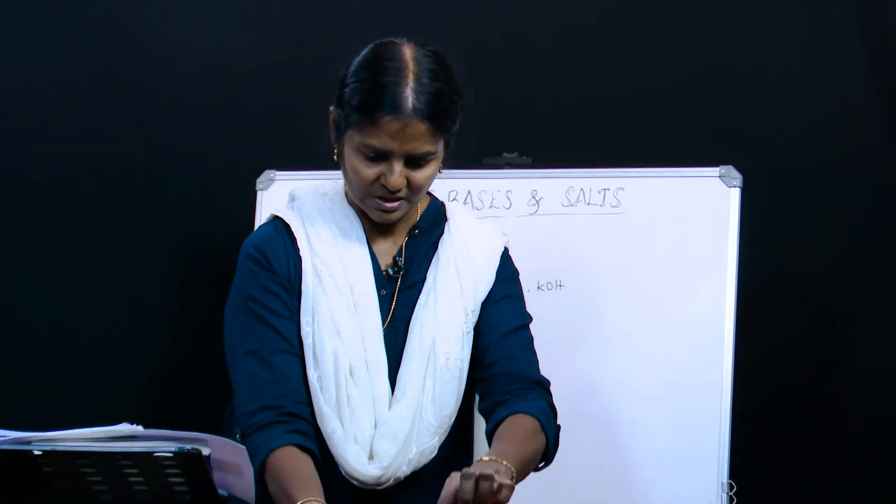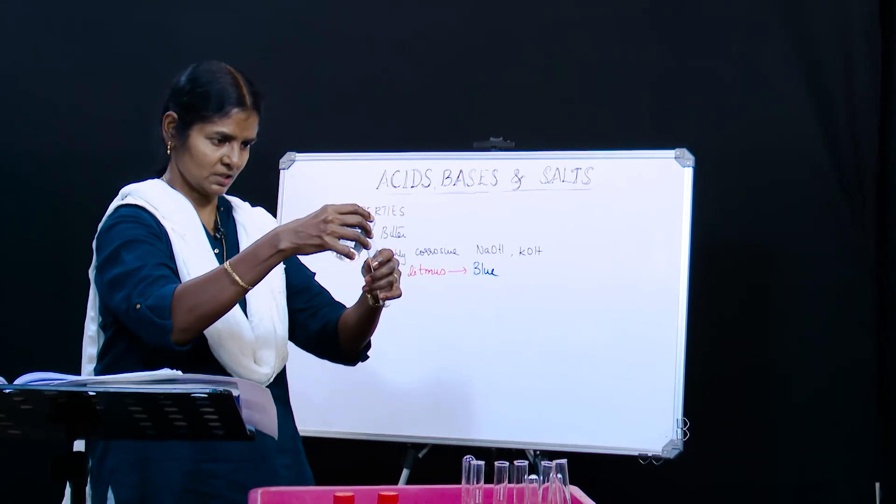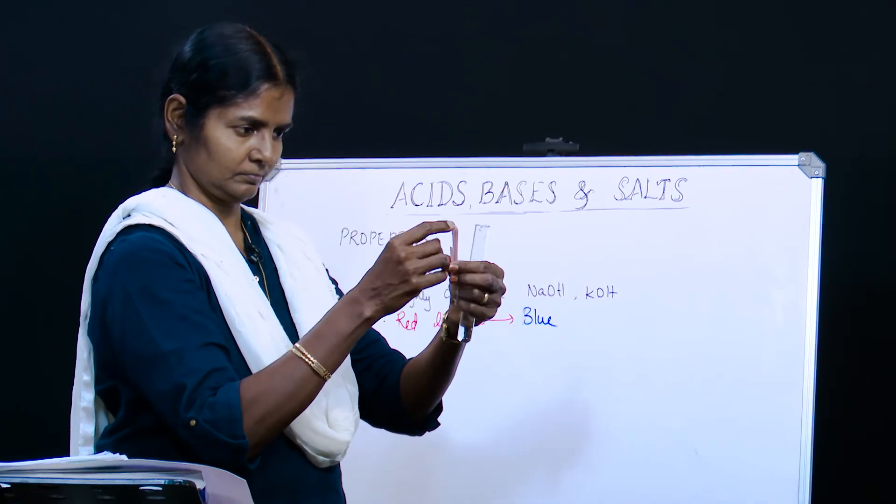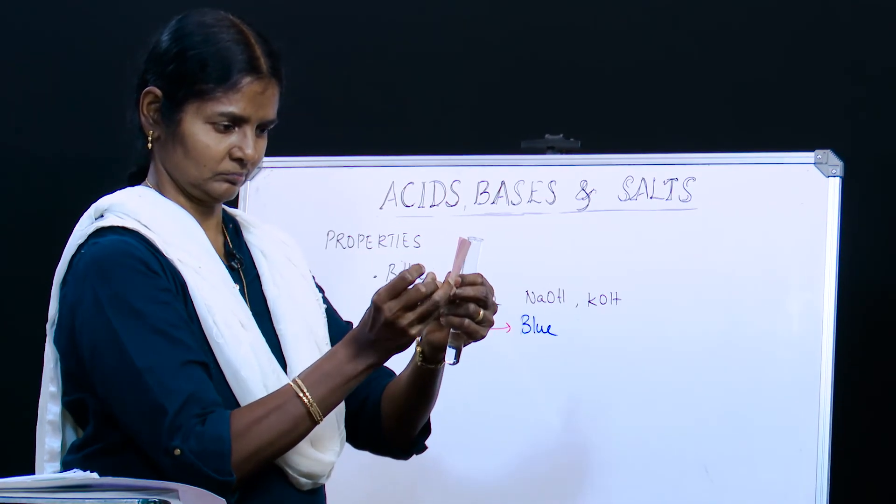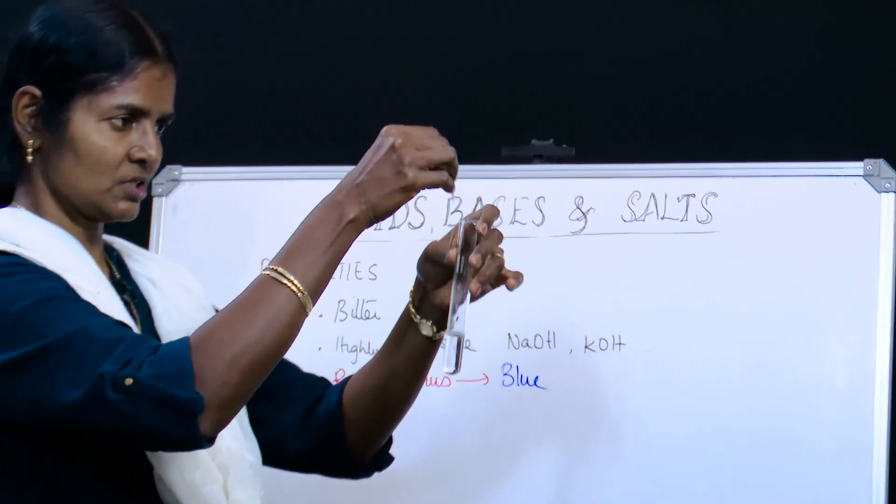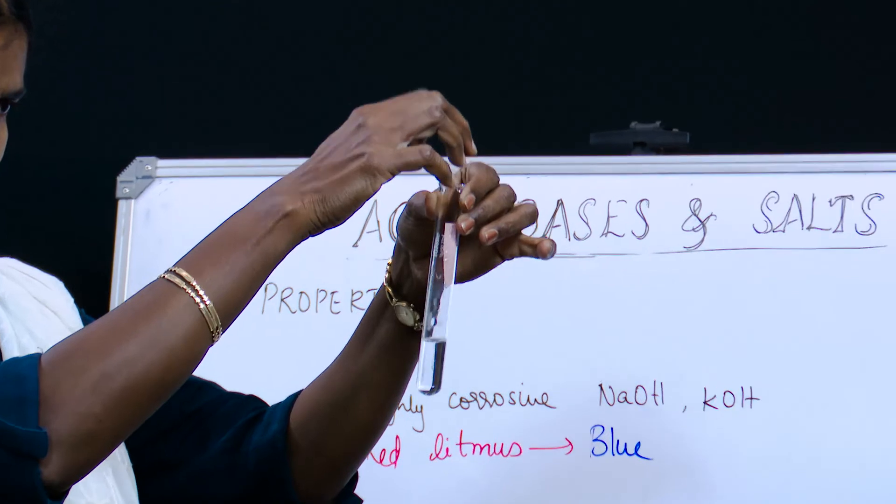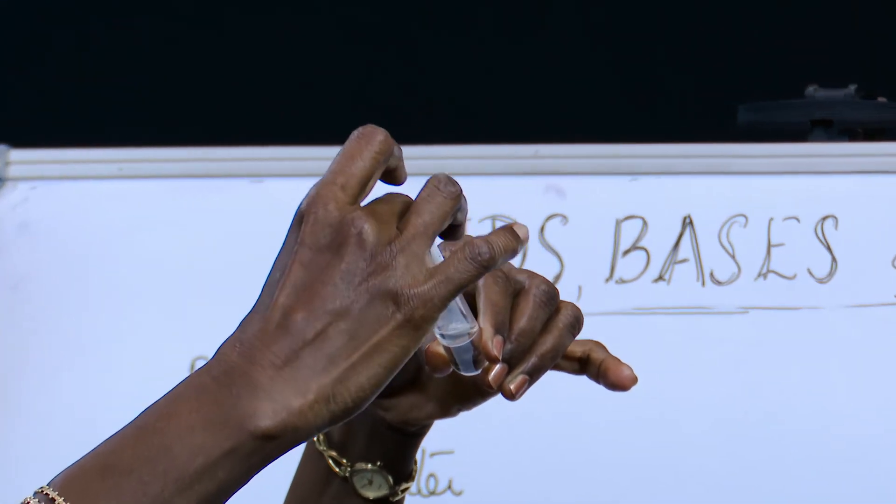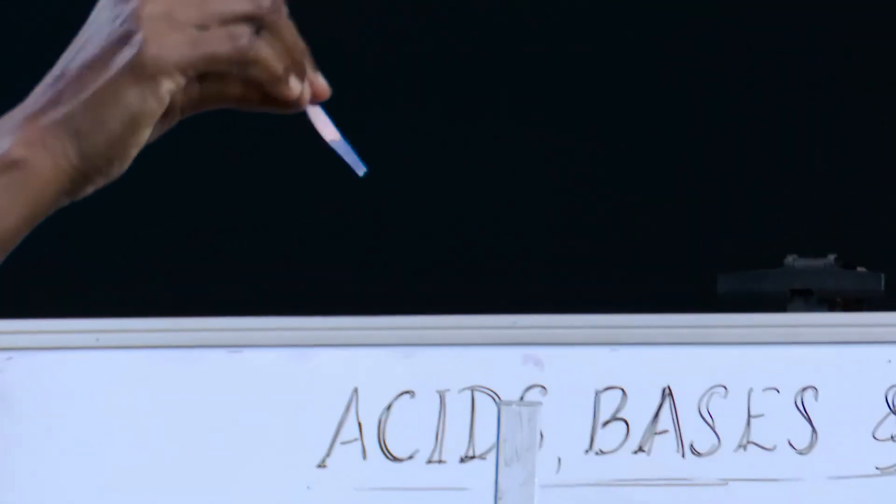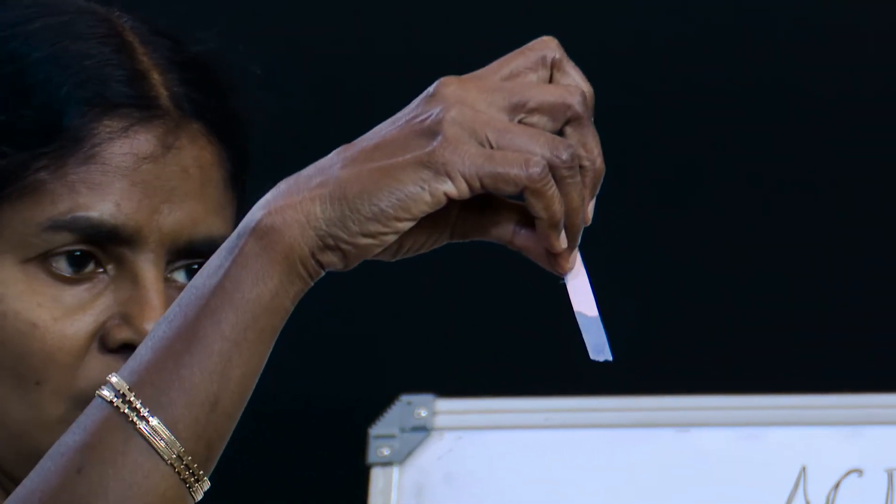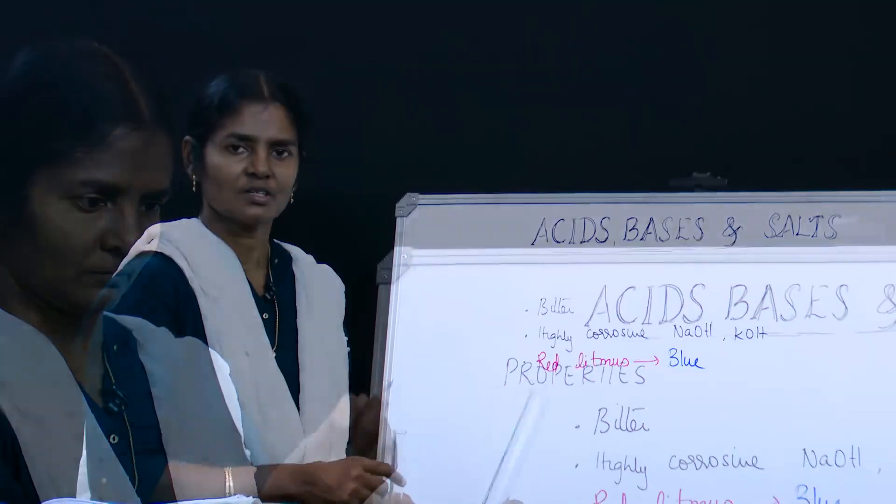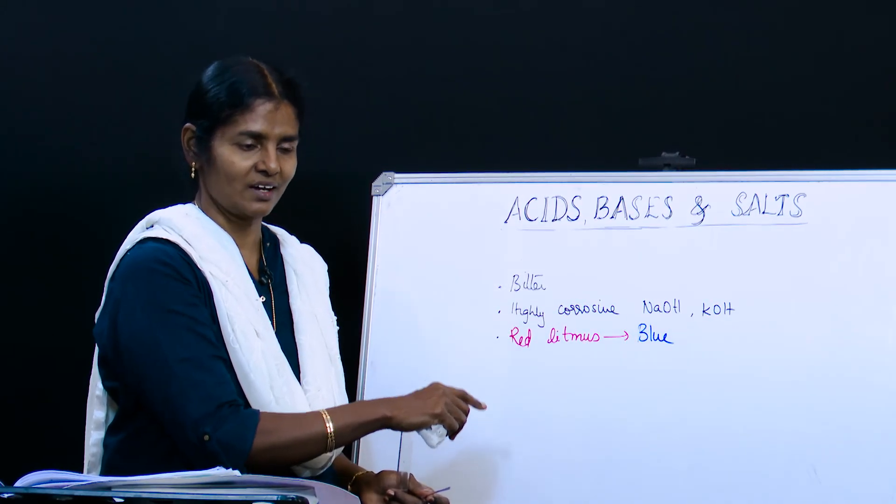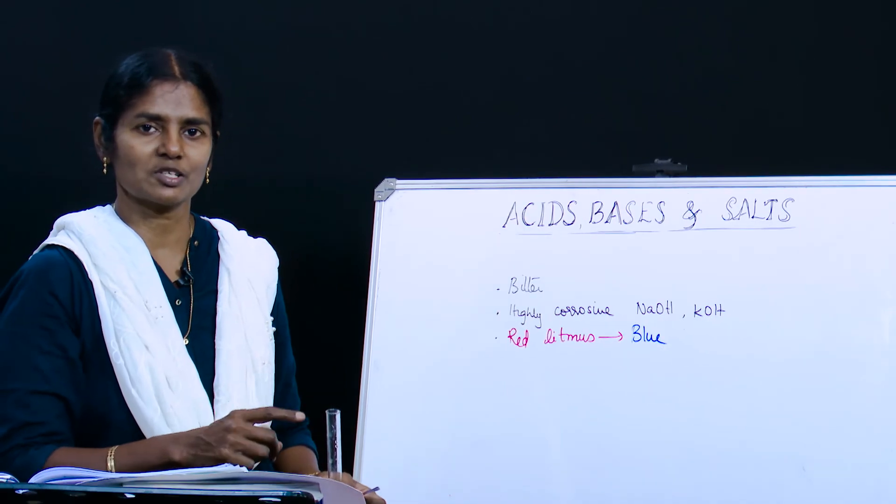When we introduce red litmus into a base, it would turn blue. So that is how we identify a base. If we take base in a test tube and we take red litmus paper and introduce this into the base, it has turned from the red color to blue. So with this we are done with bases. Now we move on to a very interesting topic. Wait and watch and keep watching. The next one is going to be on indicators.